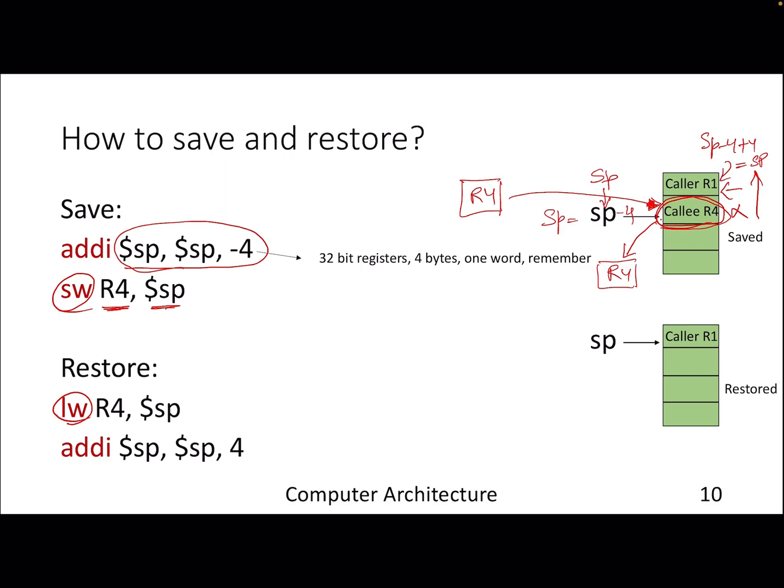Once you are done with the loading, that entry is free. You then increment the stack pointer — SP minus 4 is incremented back to SP — so it now points to the previous location. That is how the stack pointer operates in the memory area called the stack. We deal with four bytes since MIPS uses one word, which is four bytes.